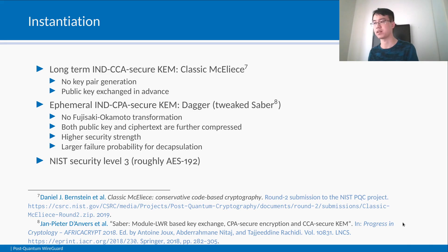With Classic McEliece fixed, the remaining amount of space in the packet unfortunately only permits slow post-quantum KEMs or KEMs without a sufficient history of cryptanalysis for the ephemeral key pair. We noticed, however, that some lattice-based IND-CCA secure KEMs almost meet the space constraint. We therefore picked Sabre, dropped its Fujisaki-Okamoto transformation since we only need IND-CPA security here, and tweaked Sabre's parameters to further compress its public key and ciphertext. The final variant, which we call Dagger, has higher compression but a larger failure probability for decapsulation. On the protocol level, such failure probability means one in every 40 million handshakes will fail — similar in effect to a lost UDP handshake packet — and our tweaking does not invalidate Sabre's security reduction.